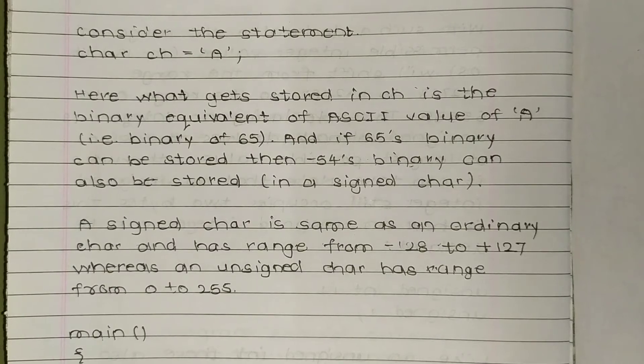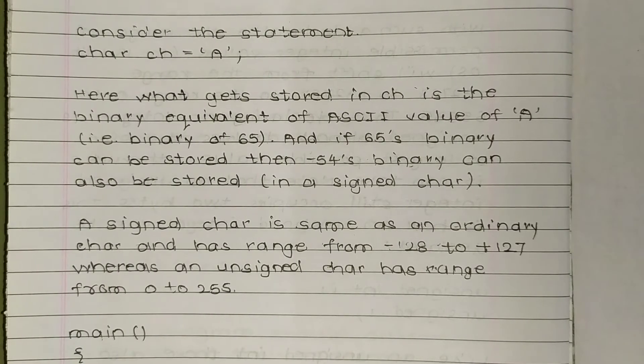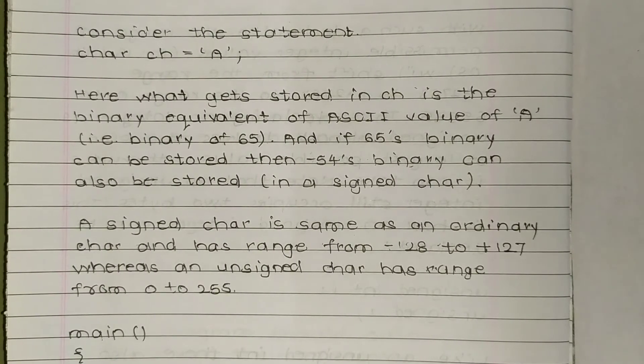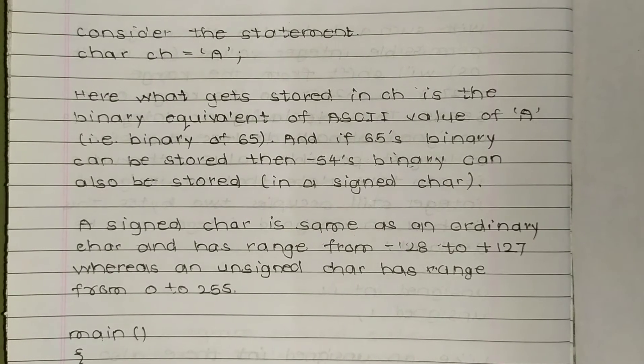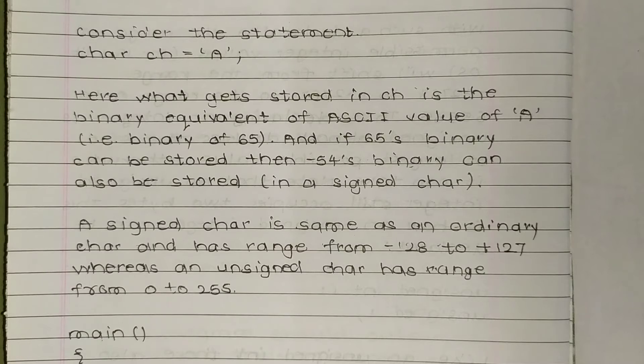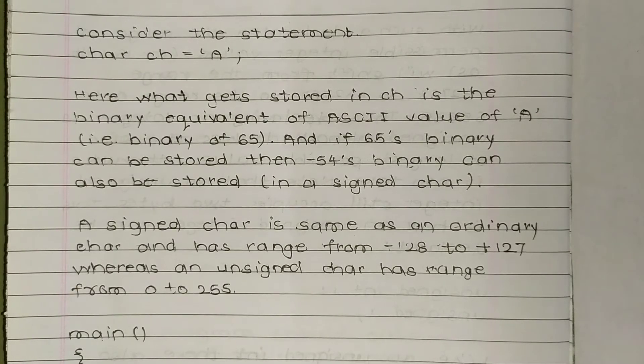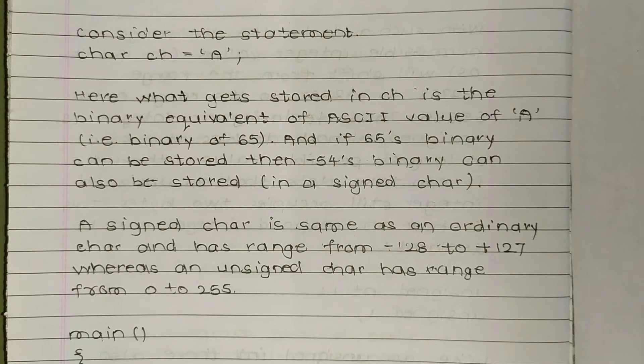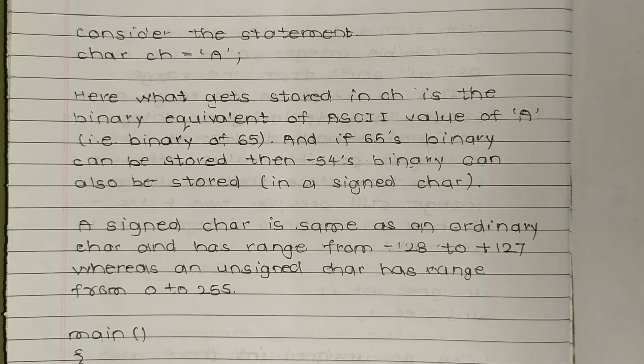If 65's binary can be stored, minus 54's binary can also be stored in signed char. Signed char is same as ordinary char and has a range from minus 128 to plus 127, whereas an unsigned char has a range from 0 to 255.